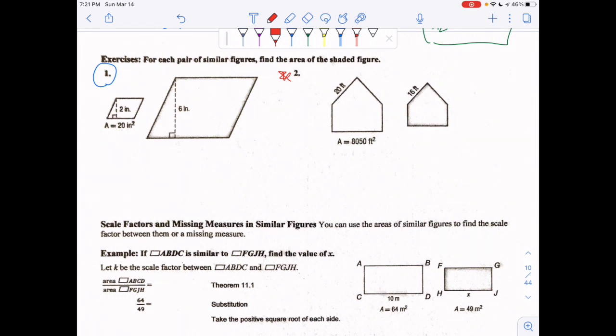Hi guys, I'll do number one for you and then you do number two on your own. Let's read the question: for each pair of similar figures, find the area of the shaded figure. Which one is shaded? This one is shaded.